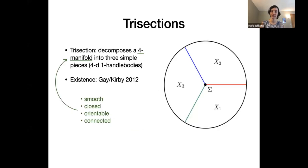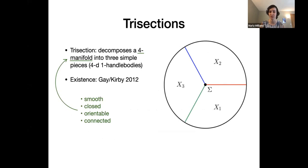A trisection decomposes a four-manifold into three simple pieces — four-dimensional one-handle bodies. Gay and Kirby introduced the idea of trisections in 2012 and proved that every smooth, closed, orientable, connected four-manifold has a trisection.